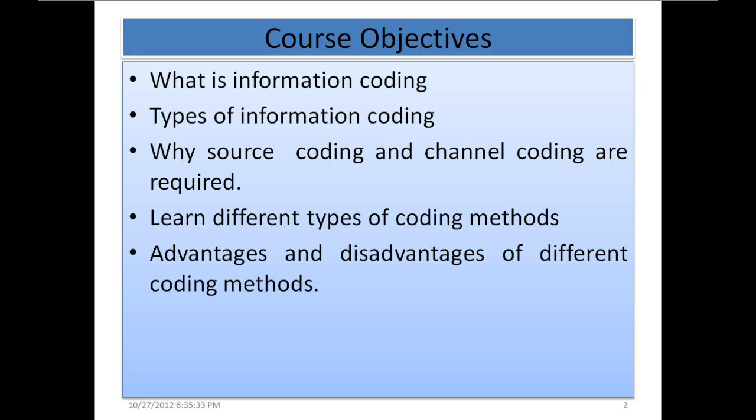Let's summarize few major objectives of this course. First, what is information coding? Then types of information coding. There are two major types: source coding and channel coding. Why source coding and channel coding are required? Learn different types of channel coding methods, advantages and disadvantages of different coding methods.